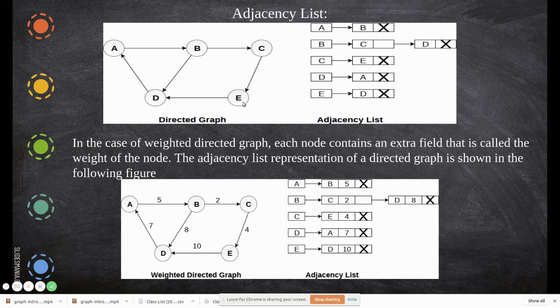Then C. Out degree, it is only E. This is an in degree, so this is not considered. So C to E. Then D, E, these two are in degree, so only this will be considered. D to A.